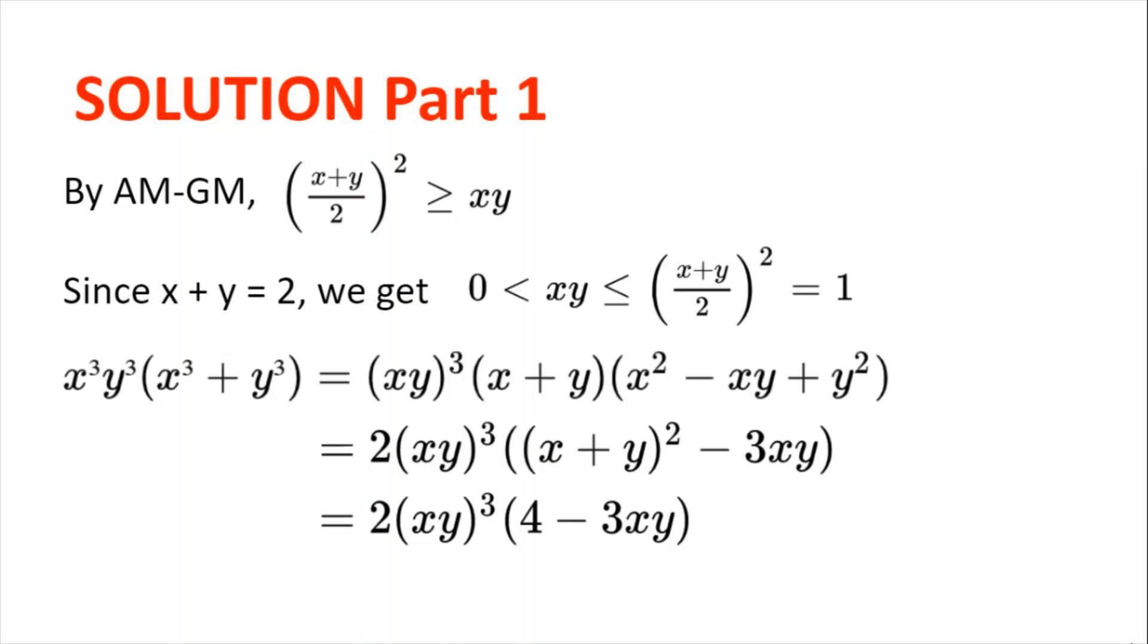This can be rewritten as 2(xy)³((x+y)² - 3xy), which in turn is 2(xy)³(4 - 3xy).